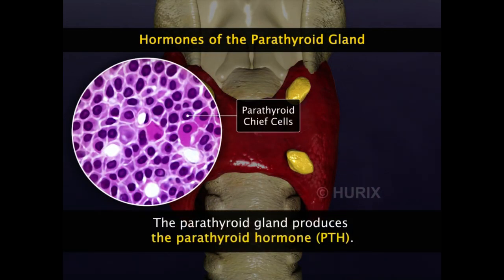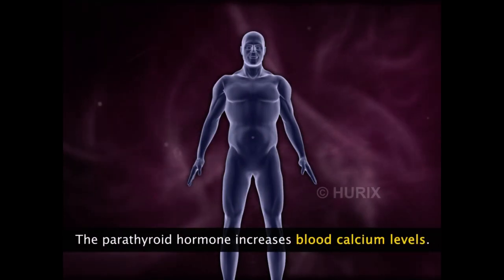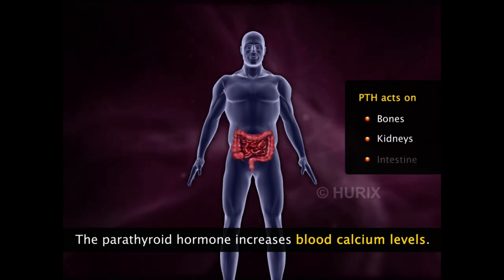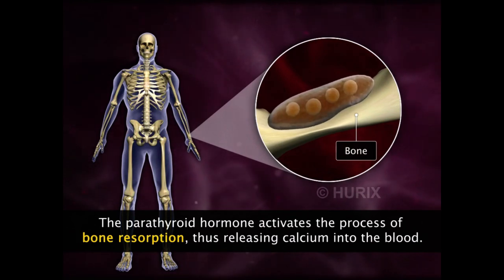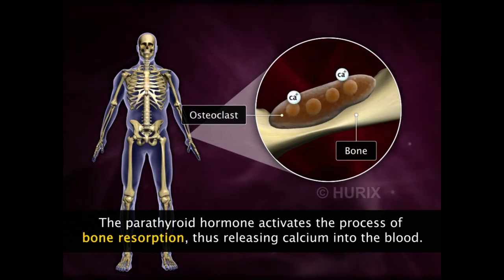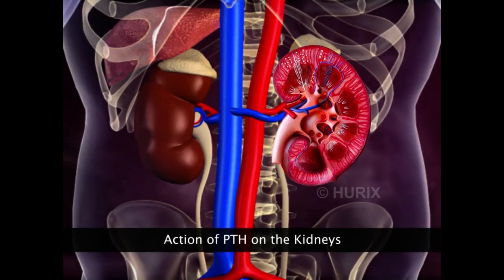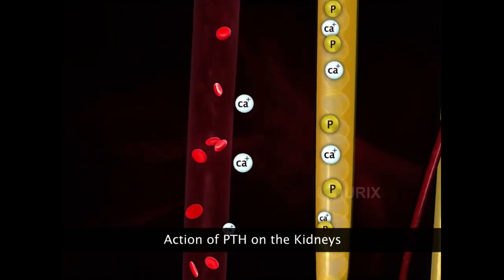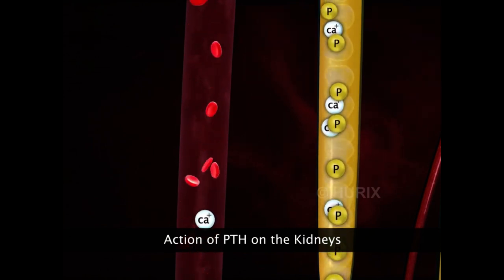The parathyroid chief cells produce the only hormone secreted by the parathyroid gland: the parathyroid hormone PTH. The parathyroid hormone increases blood calcium levels by acting on three target sites in the body: bones, kidneys, and the intestine. In the bone, the parathyroid hormone activates the process of bone resorption by osteoclastic cells, leading to the demineralization of the bones and the release of calcium into the bloodstream. The parathyroid hormone acts on the kidneys to increase reabsorption of calcium into the blood, preventing loss of calcium in the urine. At the same time, it encourages excretion of phosphate in urine, thus decreasing blood phosphate levels.